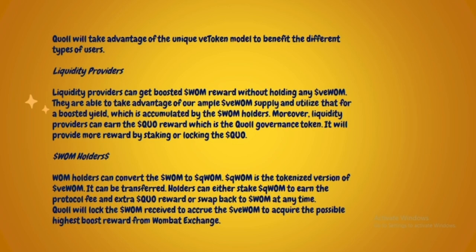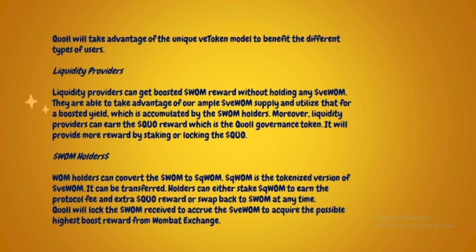Quoll takes advantage of the unique vWOM token model. Liquidity providers can get boosted WOMB rewards without holding any WOMB — they take advantage of Quoll's ample WOMB supply for boosted yield accumulated by WOMB holders. Liquidity providers can also earn the qWOM governance token and get more rewards by staking or locking qWOM. WOMB holders can convert WOMB to qWOM, which is a tokenized version of vWOM. Holders can either stake qWOM to earn protocol fees and extra rewards, or swap back to WOMB at any time.